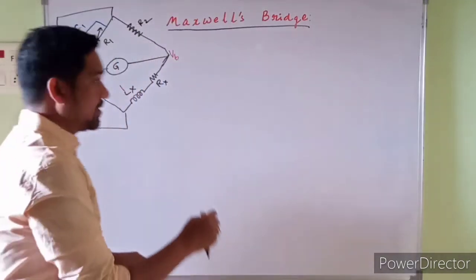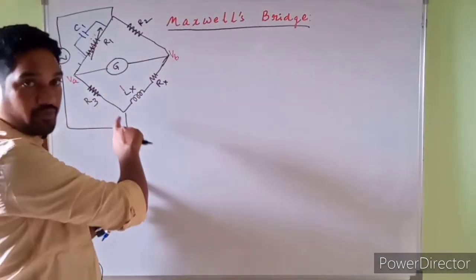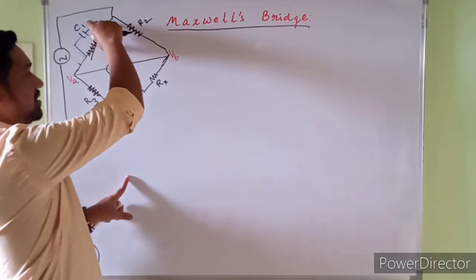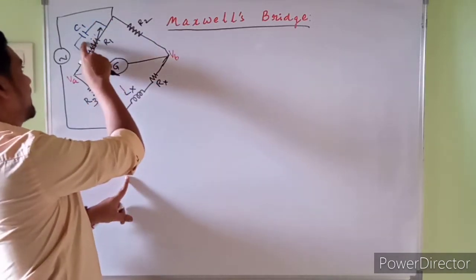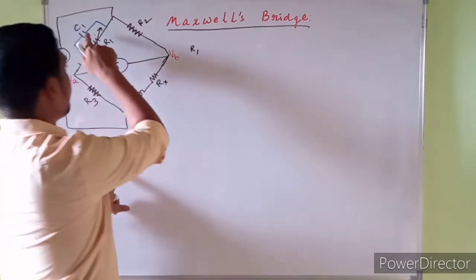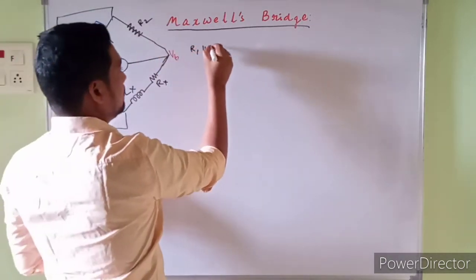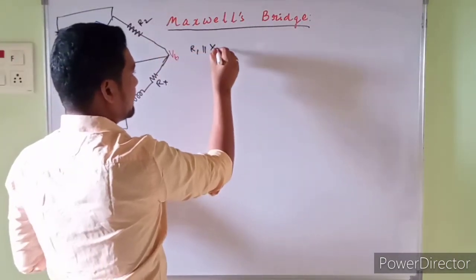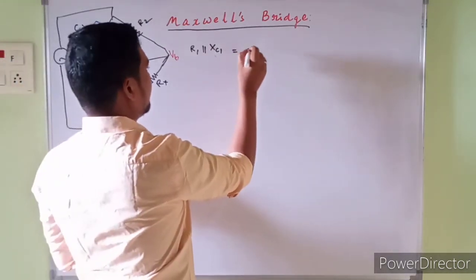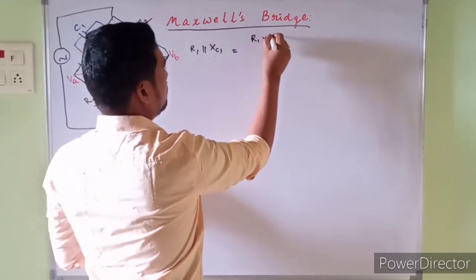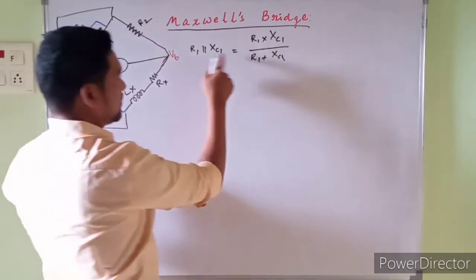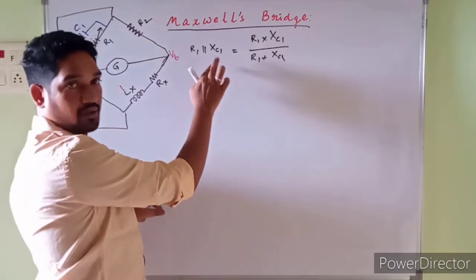Under balanced condition the product of opposite impedances are equal — I have already proved this. No problem with R2 and R3, but the arm with R1 parallel to C1 needs to be evaluated. The impedance of the capacitor is XC1, which is one upon jωC. So the parallel combination of R1 and XC1 is written as R1·XC1 divided by (R1 + XC1).